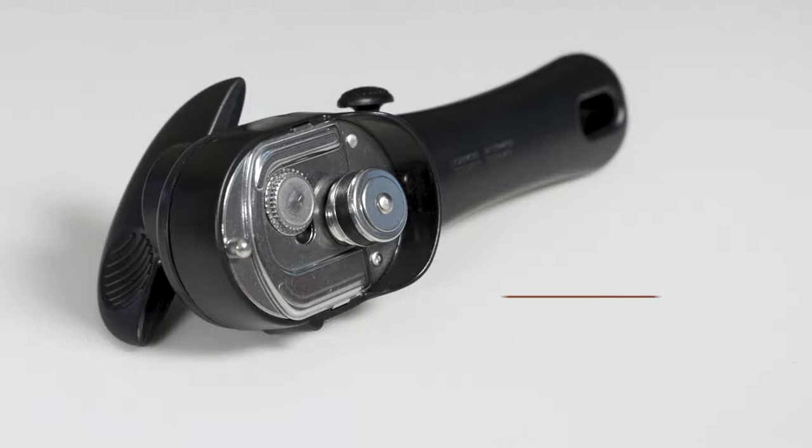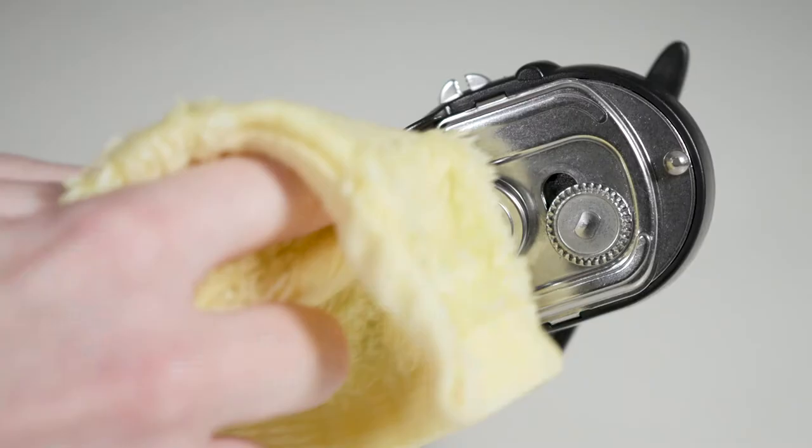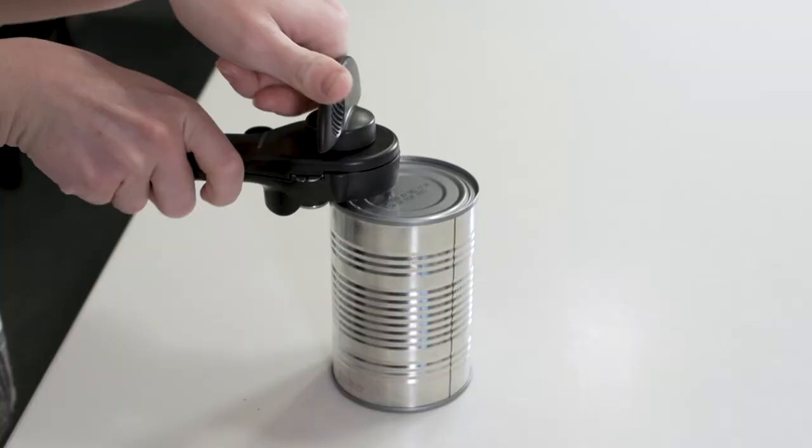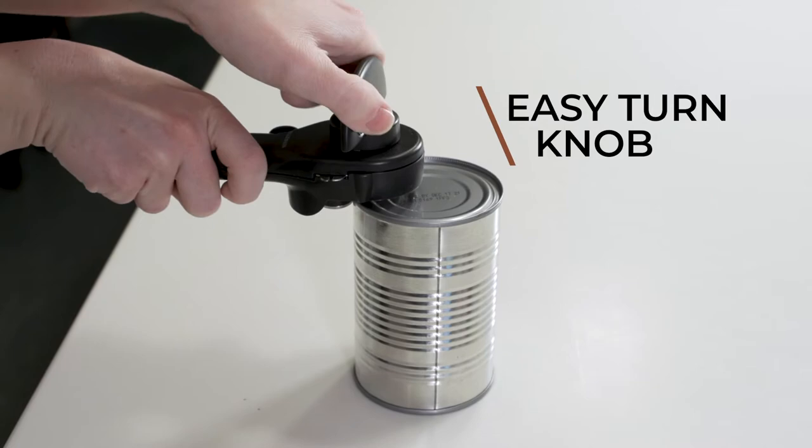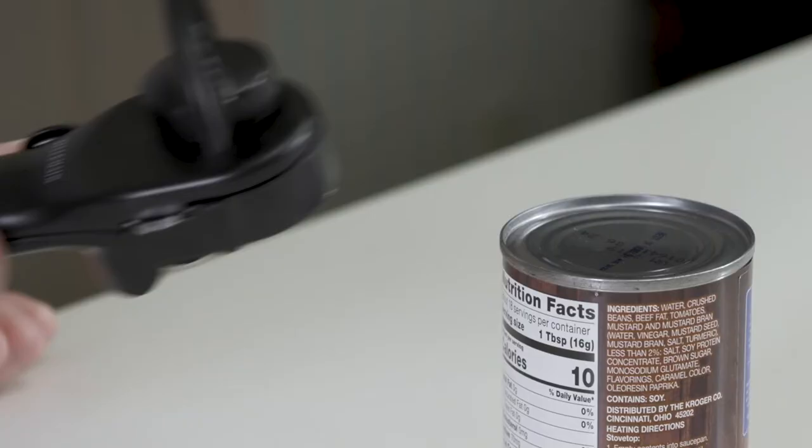That's why we've designed a can opener to help make cooking simple and safe. The stainless steel cutting mechanism opens cans without leaving a sharp edge and can be cleaned more easily than standard can openers. And our sleek design and easy turn knob make opening any can simple.